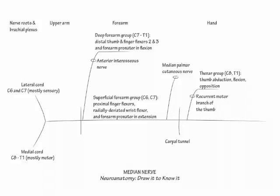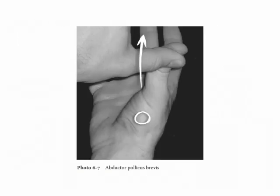To demonstrate the action of abductor pollicis brevis, raise your thumb toward the ceiling. Abductor pollicis brevis provides thumb abduction perpendicular to the plane of the palm.